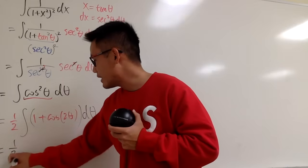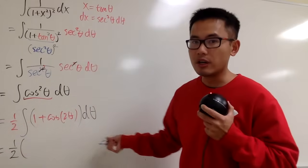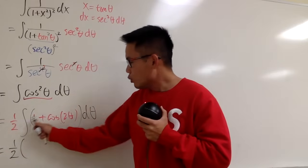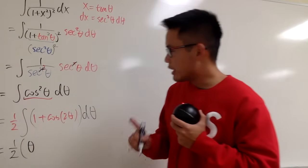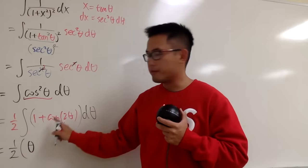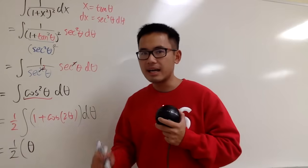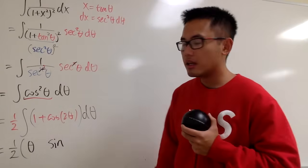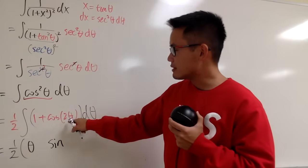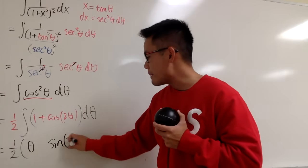Here we have 1 half, and let's put down parentheses for the result of integration. The integral of 1 in the theta world is just theta. The integral of cosine is positive sine. And because the input is just a constant times theta, so it stays the same, 2 theta.